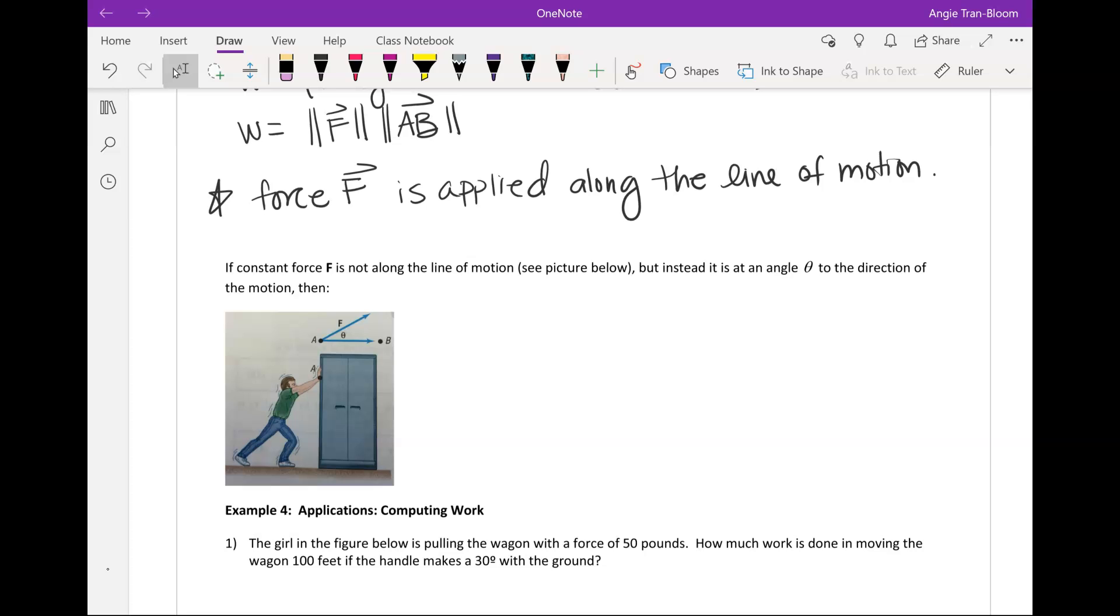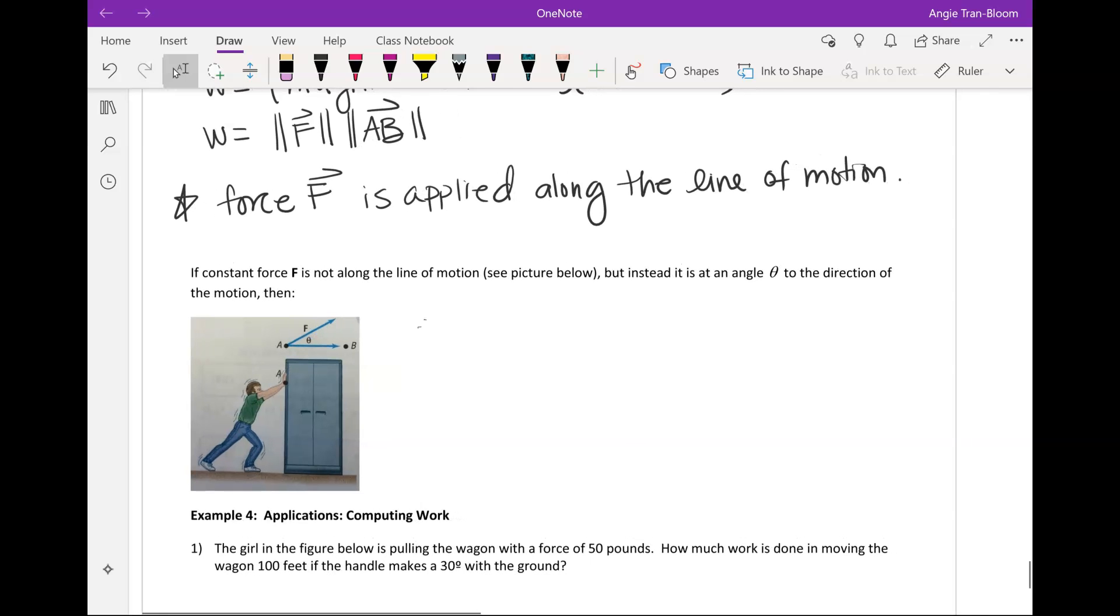So if the constant force is not along the line of motion, but instead it is at an angle, let's call it theta, to the direction of motion, then the work W is the work W done by force in moving an object from A to B.